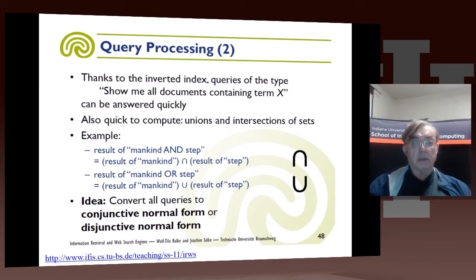So this allows us to, the inverted index allows us to answer very quickly the queries, such as find all documents containing a given term. And then you can also combine indices to find unions and intersections. Because obviously that corresponds to union and joining and intersecting the indices.